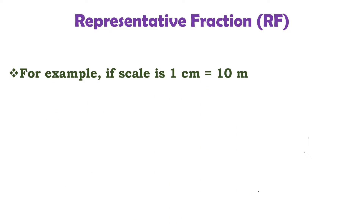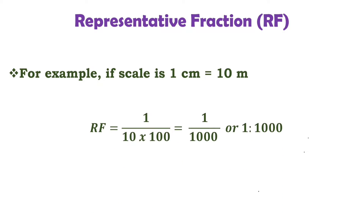Let us take one example. If the scale is 1 centimeter equals 10 meters, then RF equals distance on drawing, which is 1 centimeter, divided by distance on ground, which is 10 meters. We convert 10 meters to centimeters by multiplying by 100, since 1 meter equals 100 centimeters, giving 1000 centimeters. So RF becomes 1 is to 1000. Similarly, if the scale is 1 centimeter equals 1 meter, it can be represented as 1 is to 100.